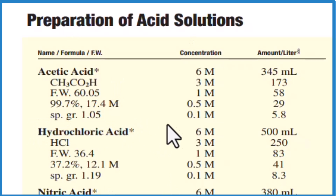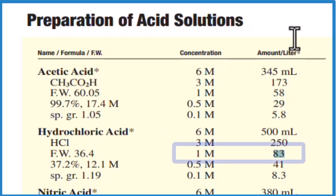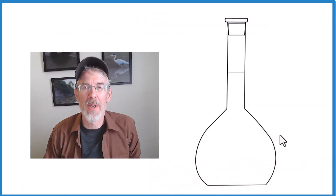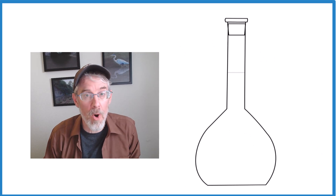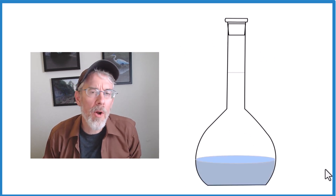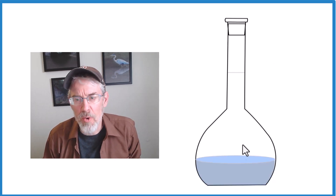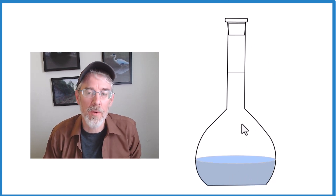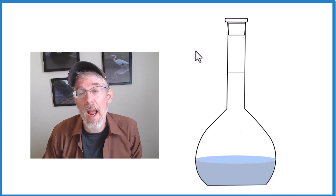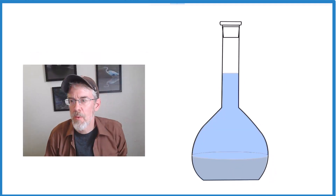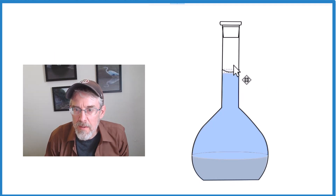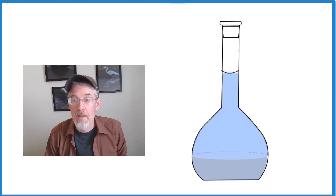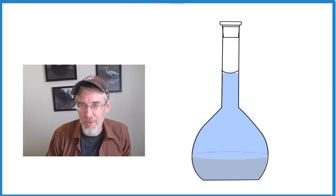If you have concentrated hydrochloric acid, it's right about 12 molar, and you need 83 milliliters in one liter to make that solution. So we get our one liter volumetric flask and add some water first, because once we add that concentrated hydrochloric acid it can get kind of hot. We swirl that around, then add water up to the mark so the meniscus comes right to the line. That's a one molar solution of hydrochloric acid.